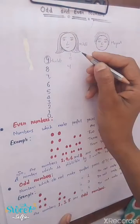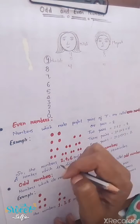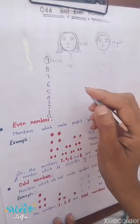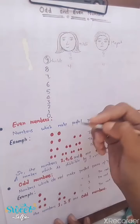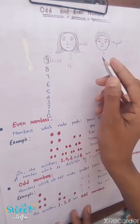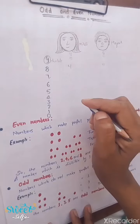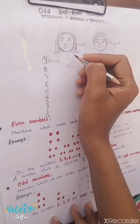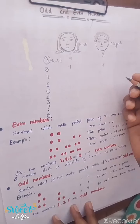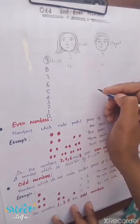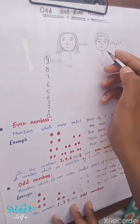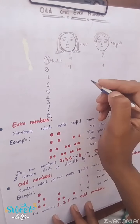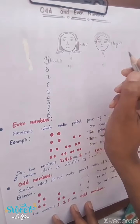This is Mayank and this is Mitali. I have some chocolates and I have to distribute them between Mayank and Mitali equally. Firstly, I have nine chocolates. Can we distribute them equally? No. If I give four chocolates to Mitali, I have to give five to Mayank. If I give five to Mitali, I have to give four to Mayank. So I cannot distribute nine chocolates equally.